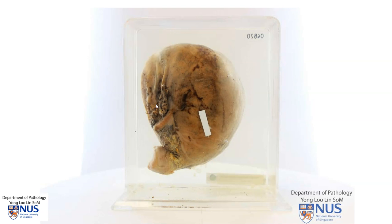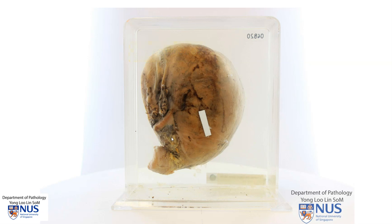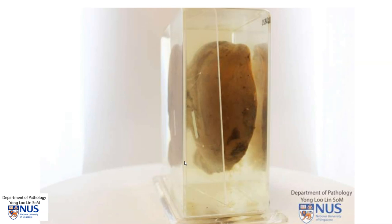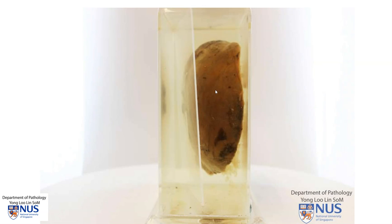At this angle, we can see one side of the adnexal structures, which again are truncated, and this is the uterine serosa.